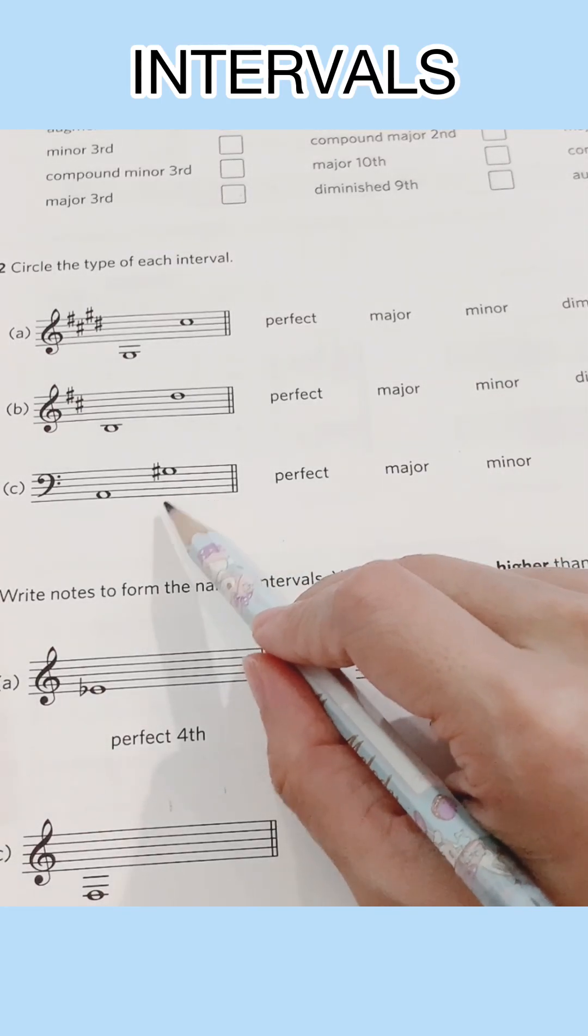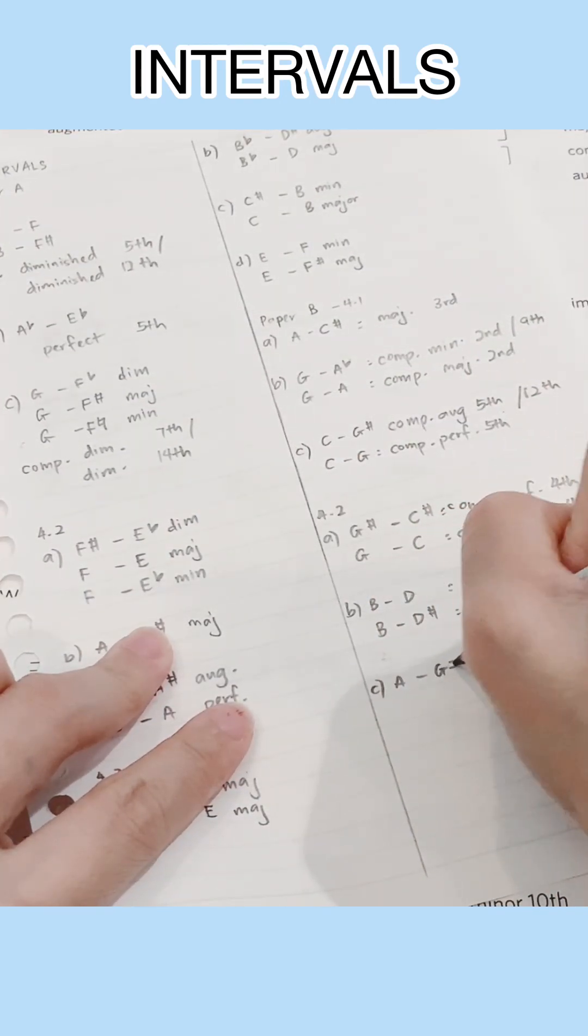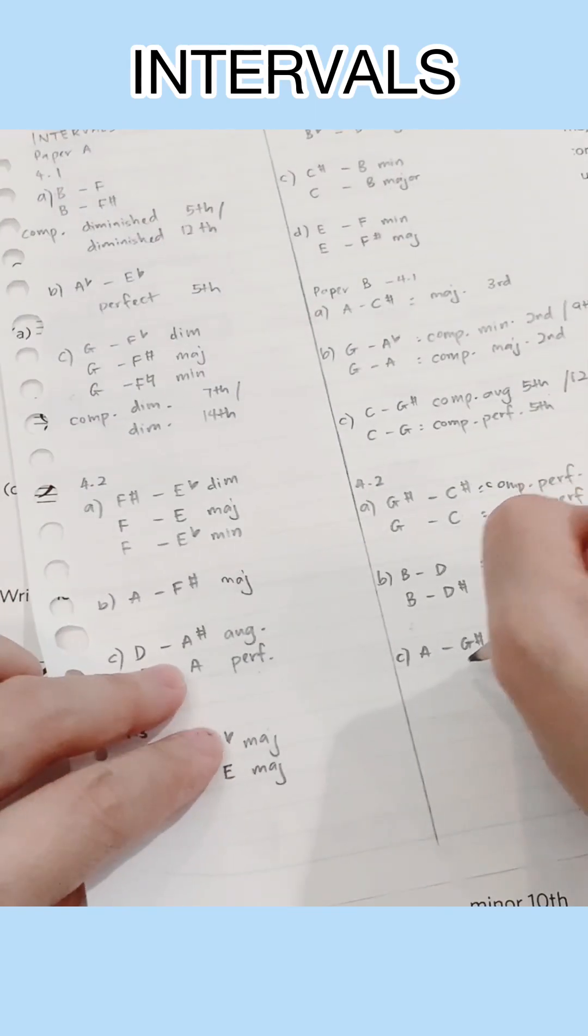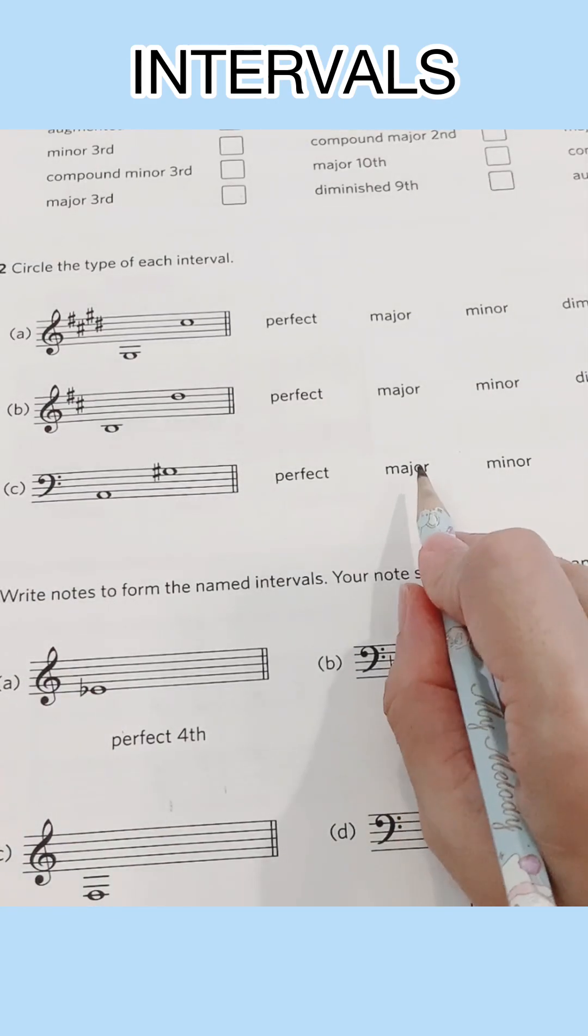Now lastly, we have A to G sharp. So the interval would be a seventh. In the A major scale, G does have a sharp. So this is a major seventh.